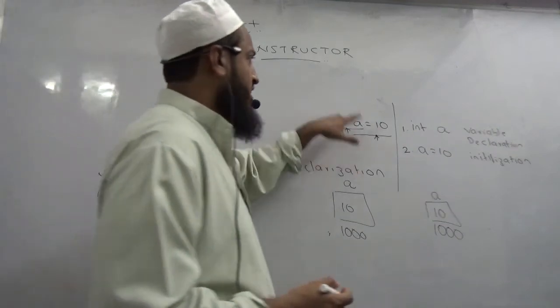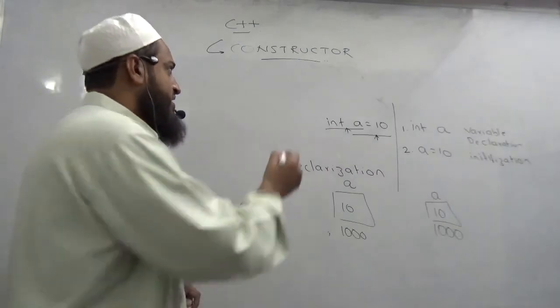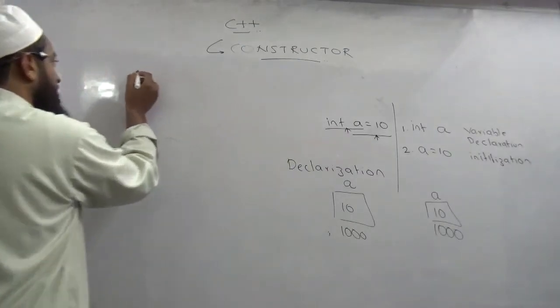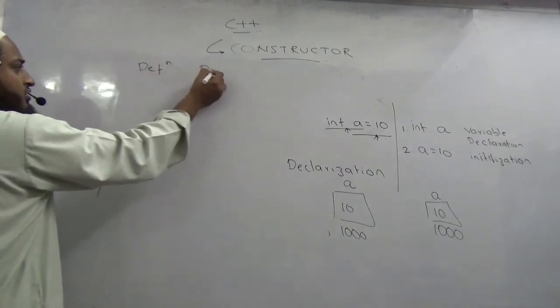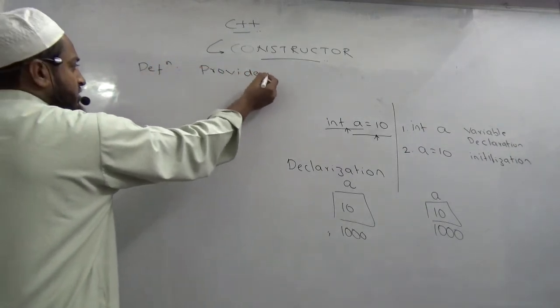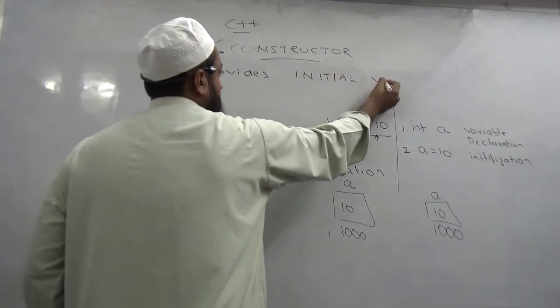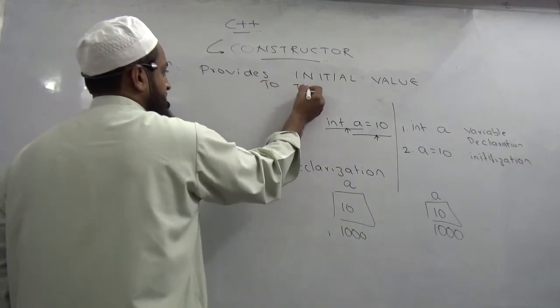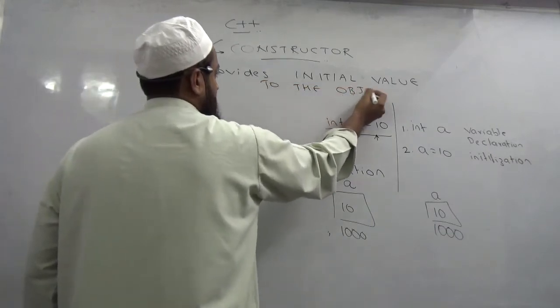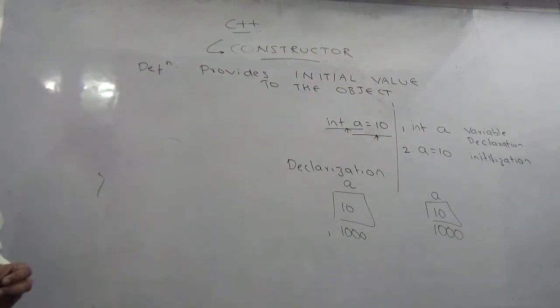So this is what the constructor does. It provides initial value to the object. If I need to define a constructor in one line, you will say it provides initial value to the object. What does the constructor do? It provides initial value to the object.